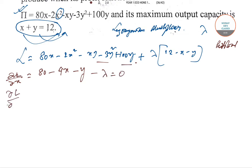The next equation, del L/del Y, gives minus x minus 6y plus 100 minus lambda equals zero. The last one, del L/del lambda, is 12 minus x minus y.